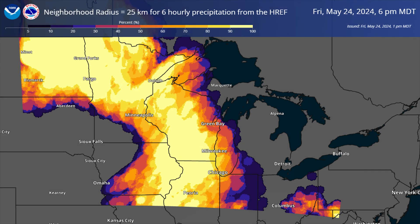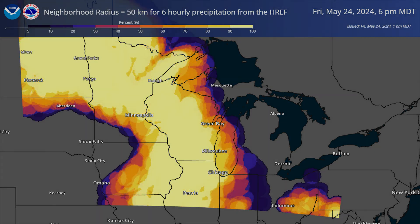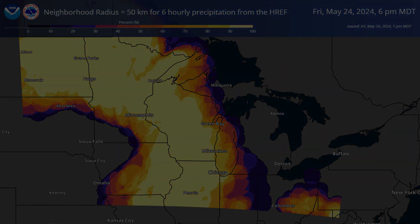This could be from the individual bands of precipitation being picked up within the larger search radius. Lastly, we look at 50 kilometers. Much of the detail is lost across Wisconsin and Illinois, and we're starting to see some artifacts from the neighborhood probabilities in southwestern Iowa and Ohio.